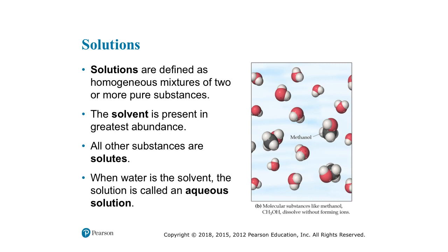A solution is defined as a homogeneous mixture of two or more substances. This whole chapter is on aqueous solutions — solutions where water is the solvent, and then we have something dissolved in water, like a solute particle. A solvent is the substance present in greatest quantity in a solution; all other substances are solutes. Water is the solvent in an aqueous solution, and we can dissolve things like methanol, sodium chloride, sugar, and all different kinds of things in water, and try to characterize the property of the particular particle dissolved in water.